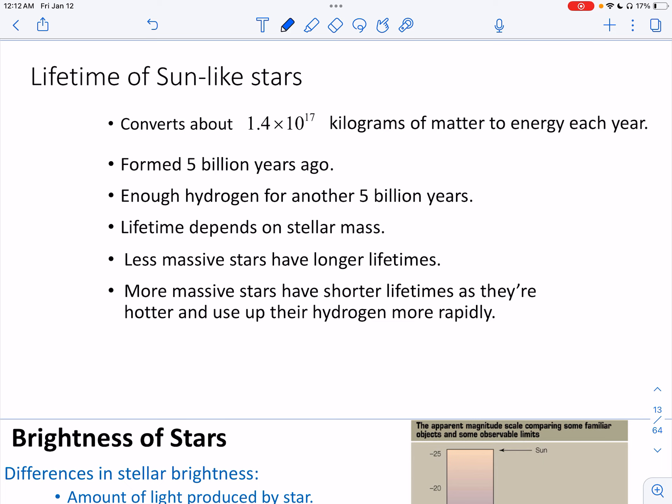The lifetime of sunlight stars, it converts about 1.4 times 10 to the 17 kilograms of matter to energy each year. That is incredible. 1.4 times 10 to 17 kilograms of matter to energy. Again, we believe that stars like the sun formed about 5 billion years ago. And it has enough hydrogen, at least our sun does. Our sun has enough hydrogen for another 5 billion years, another 5 billion years. The lifetime of the star depends on its mass. Less massive stars have longer lifetimes. More massive stars have shorter lifetimes as they're hotter and they use up their hydrogen more rapidly.